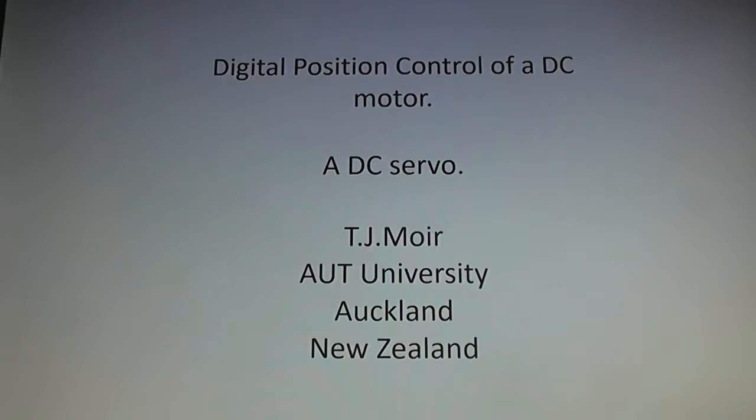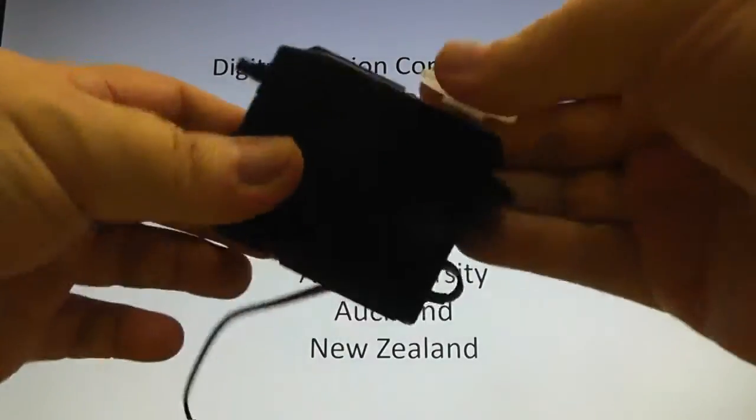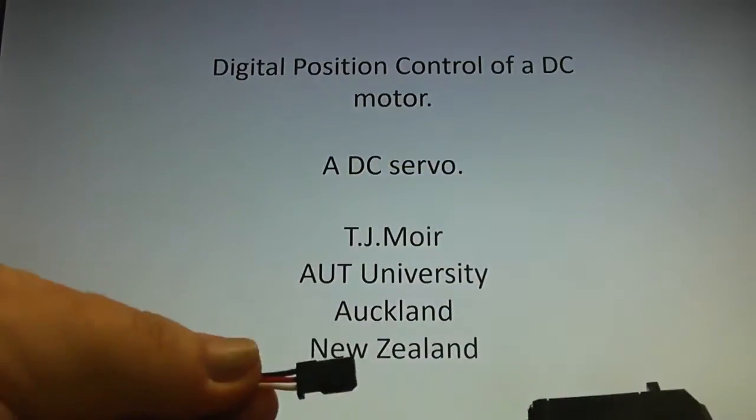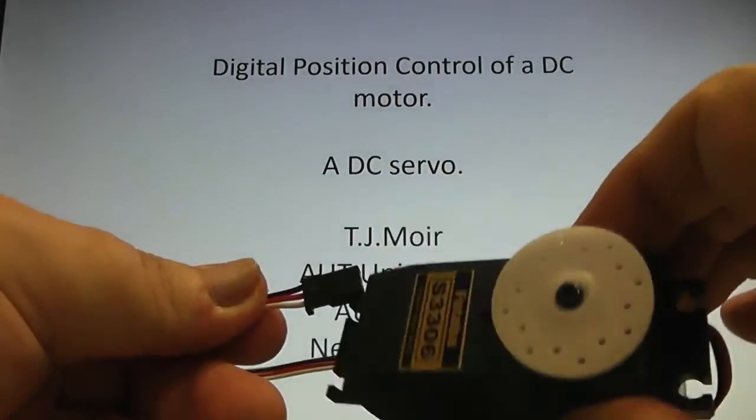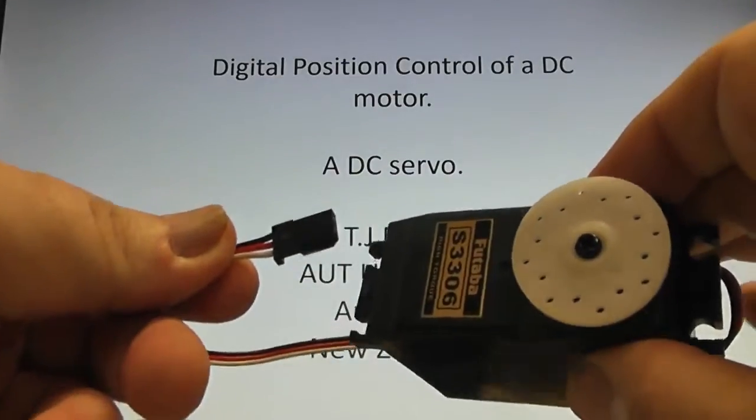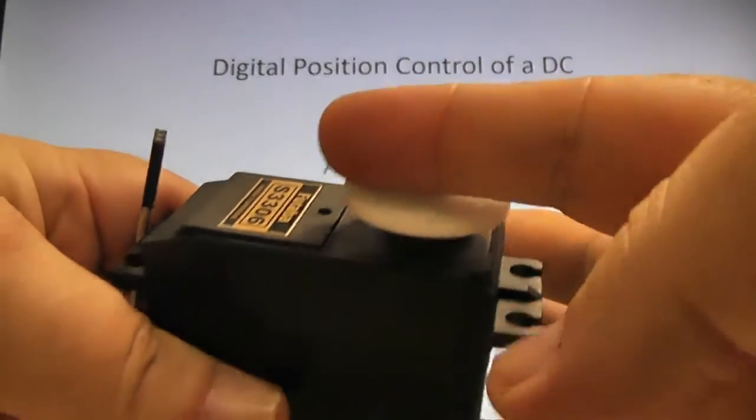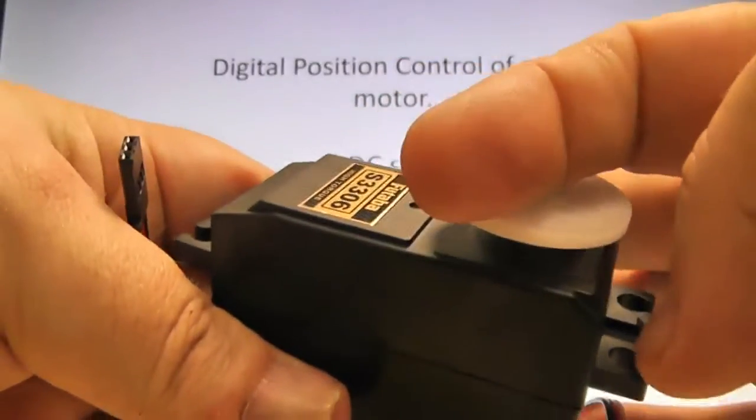When you think of a servo, most people think of the sort of things you get in model aircraft or model robotics. These small or sometimes quite a bit bigger devices that you buy which work off pulse width modulation. I've got one here, for example. It's quite a beefy one and it's got three terminals, and you can connect that to a micro or special chip and get the shaft to rotate by a certain angle clockwise or anti-clockwise.